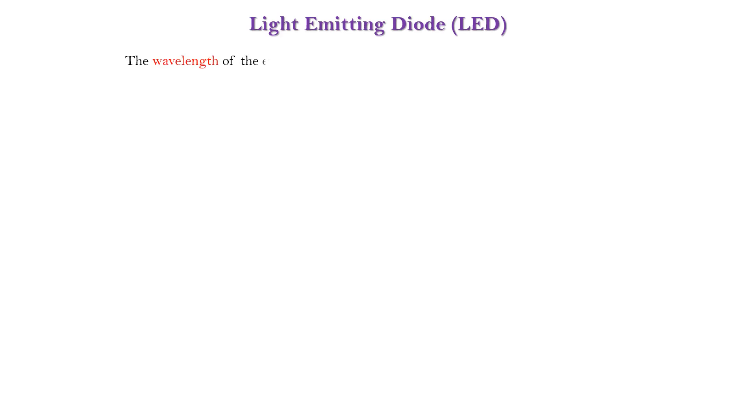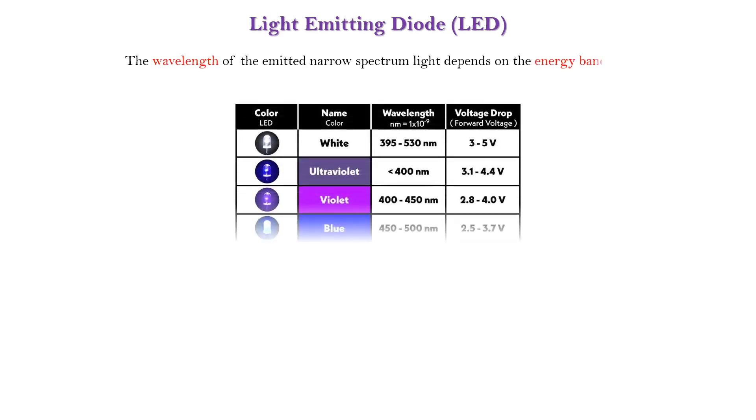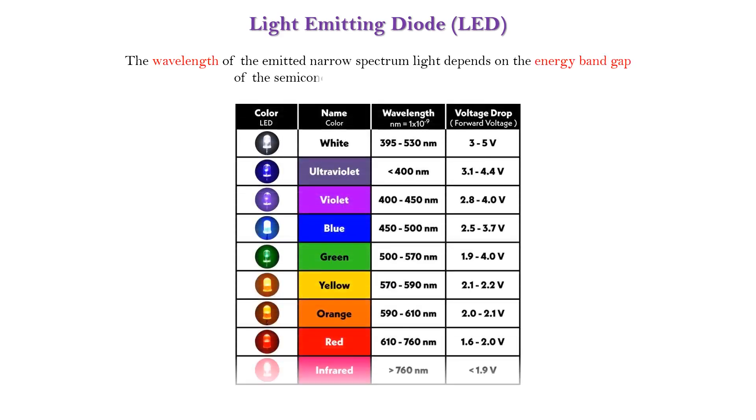The wavelength of the emitted narrow spectrum light depends on the energy band gap of the semiconductor materials and the forward voltage.